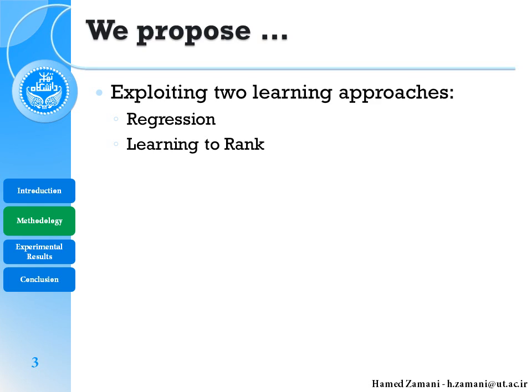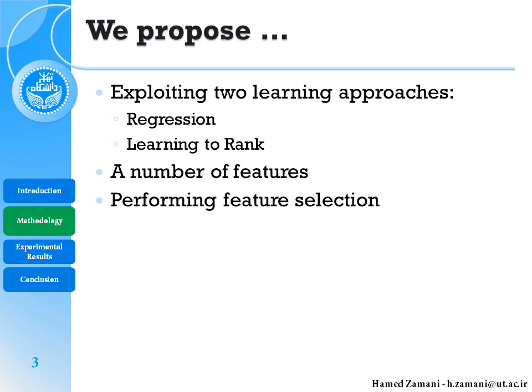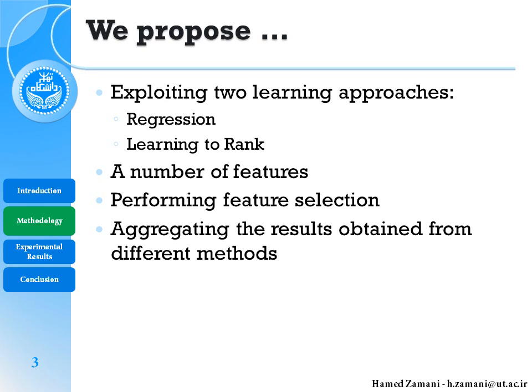To rank the tweets based on engagement, we propose exploiting two different learning approaches: regression and learning to rank, because they have two different points of view and the results might be totally different. We defined 27 features and also performed feature selection to improve the results. Finally, we aggregate the results obtained from different methods — different regression methods plus different learning-to-rank methods — as we think the aggregation results might be higher than their single results.